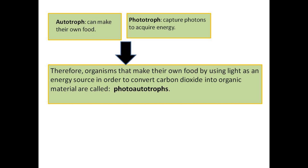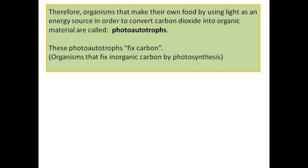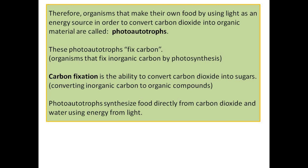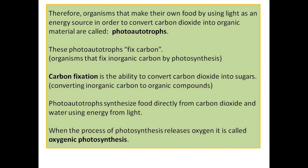Organisms that make their own food by using light as an energy source in order to convert carbon dioxide into sugars are phototrophs. These phototrophs fix carbon. Carbon fixation is the ability to convert carbon dioxide into sugars. Phototrophs synthesize food directly from carbon dioxide and water using energy from light. When the process of photosynthesis releases oxygen, it is called oxygenic photosynthesis.